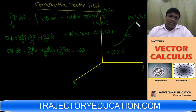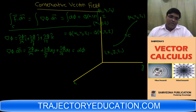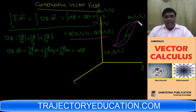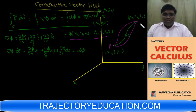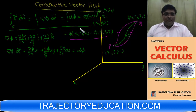What you observe is that if F is conservative, the line integral of F along any curve C joining two points depends only on the initial and final points — not on which curve joins them. Whether the curve is this path or another path, the line integral is always Phi at the final point minus Phi at the initial point. So the line integral depends only on P and Q.